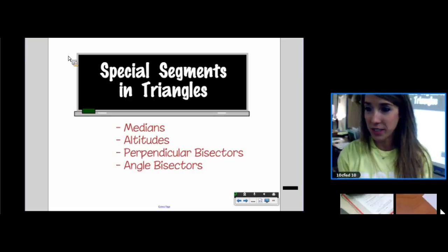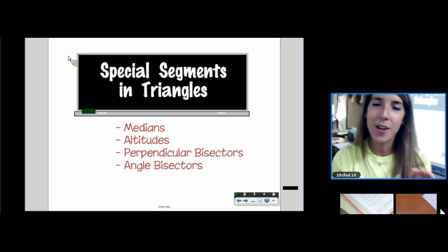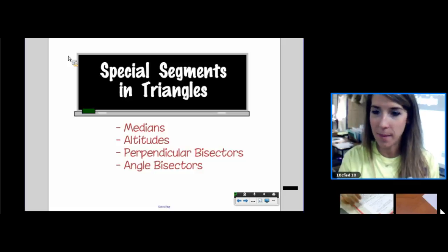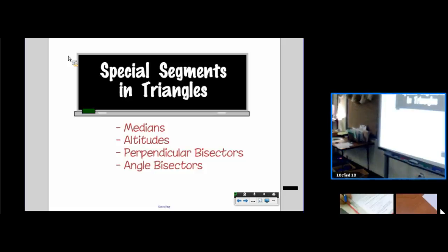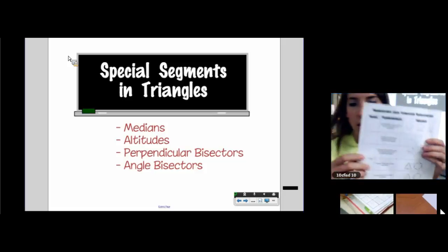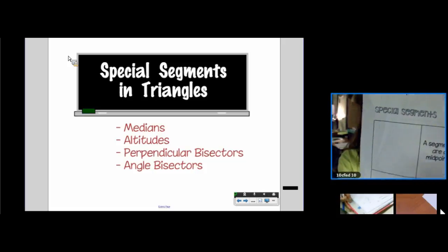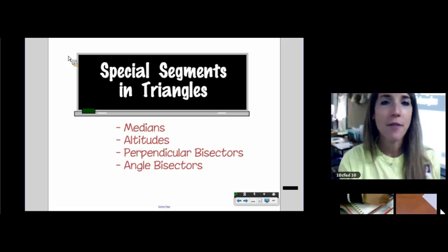Today's lesson is called special segments in triangles. We're going to take our triangles and add segments to them. Those segments are going to have names like median, altitude, perpendicular bisector, and angle bisector. Please get out these notes from last week. We did the front of these notes, but we never filled in the back where it says special segments. So we're going to dive right in.